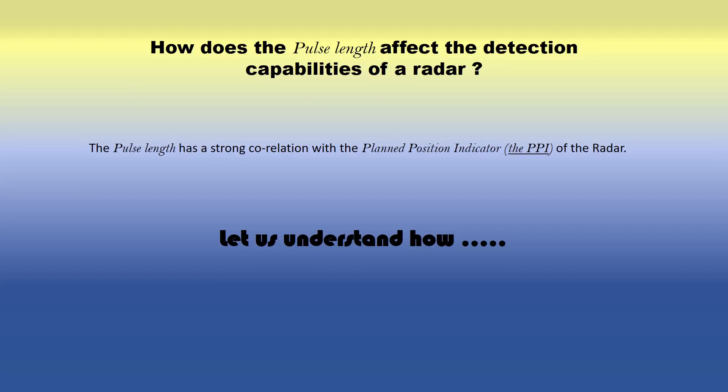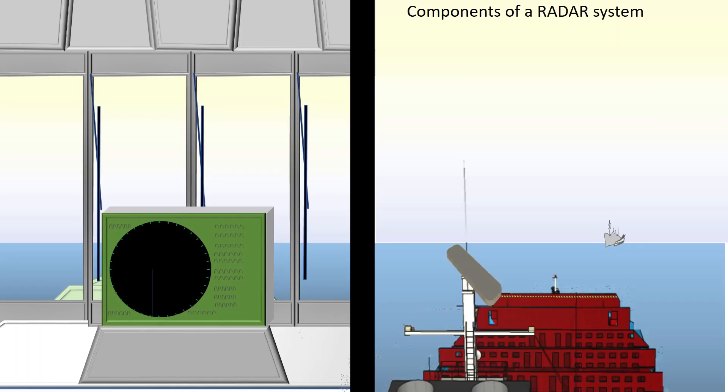How does the pulse length affect the detection capabilities of a radar? The pulse length has a strong correlation with the planned position indicator of the radar. Pulse is emitted from the scanner component of a radar system. The planned position indicator or the PPI is the other important component of a radar system.